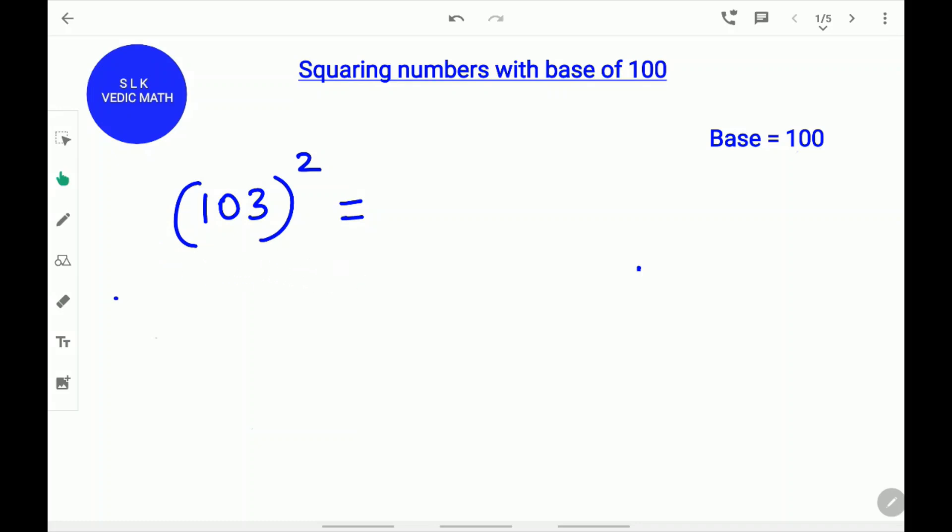103 square. First, find the difference of 103 from 100. 103 minus 100 is 3.